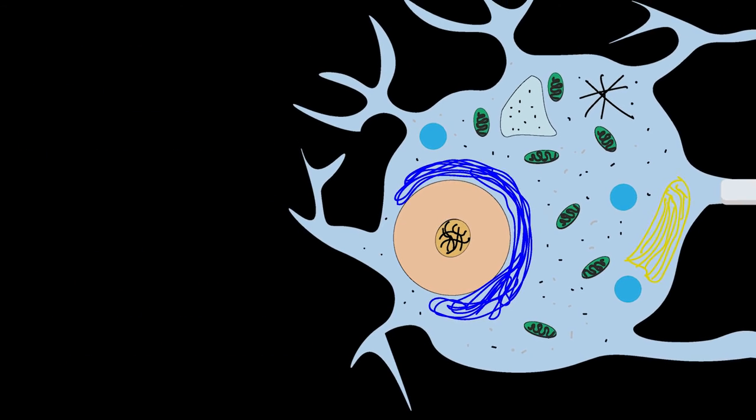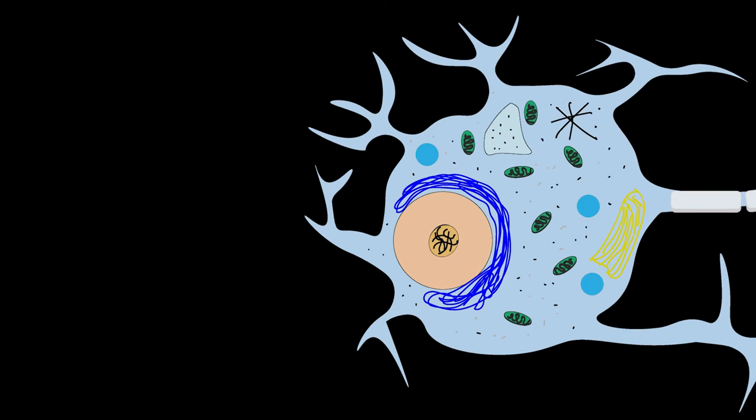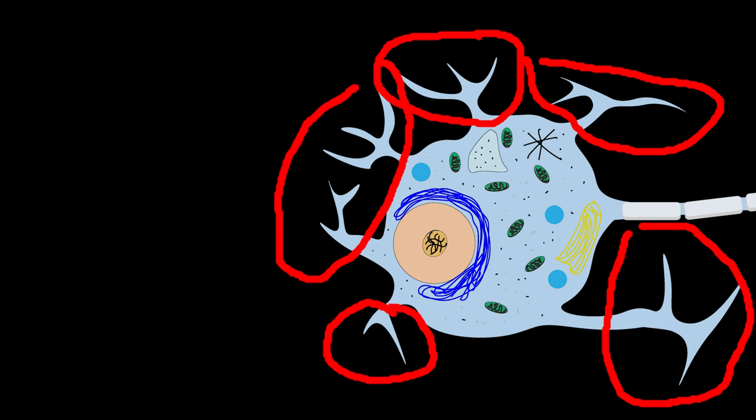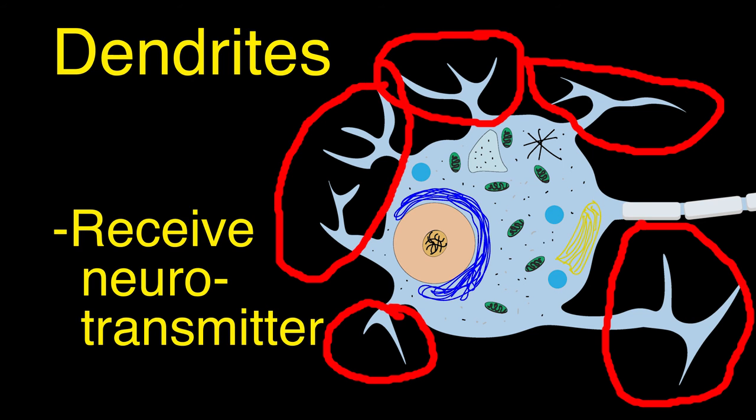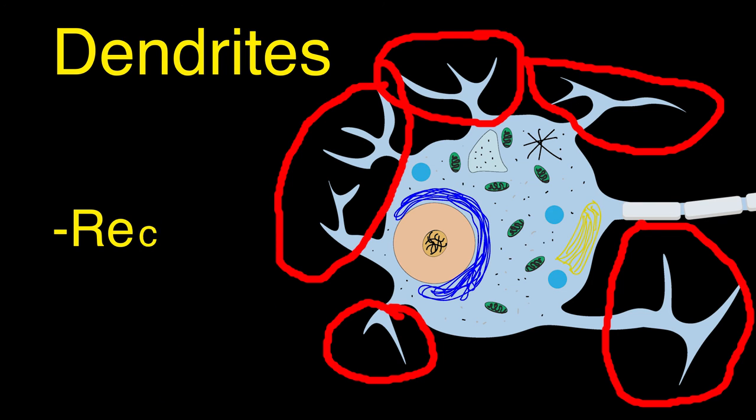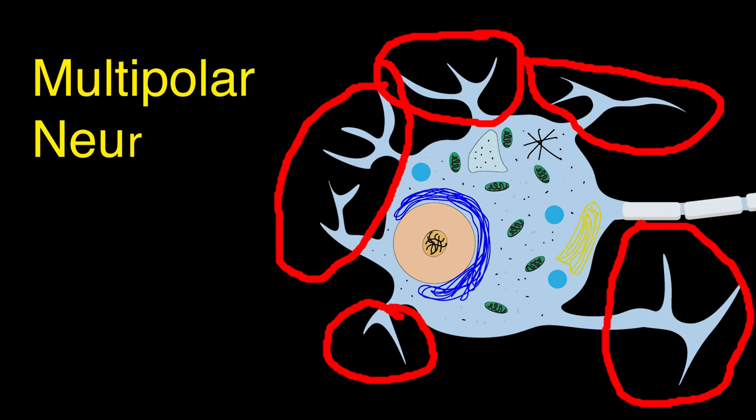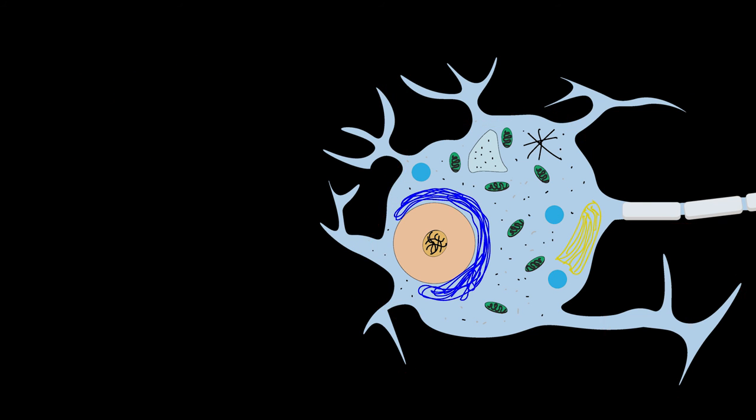Now that we have learned about the soma, or cell body, let's look at some of the other parts of nerve cells. Dendrites are branch-like structures that grow on neurons that are responsible for receiving communications in the form of neurotransmitters from other neurons. Depending on the type of neuron, dendrites might be found growing around the soma or on the end of an axon. The most common type of neuron found in the central nervous system is called a multipolar neuron. Multipolar neurons have dendrites growing out of the membrane of the soma or cell body.